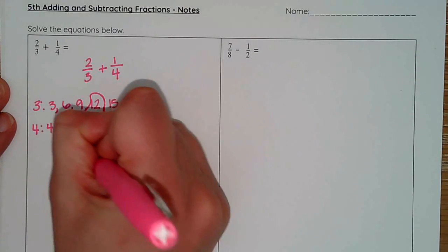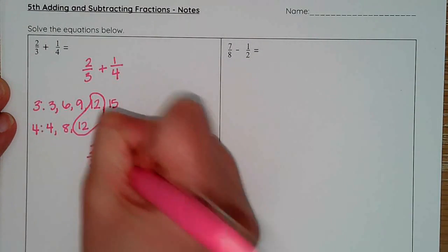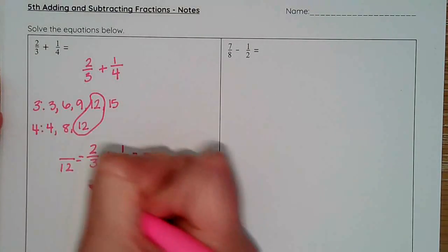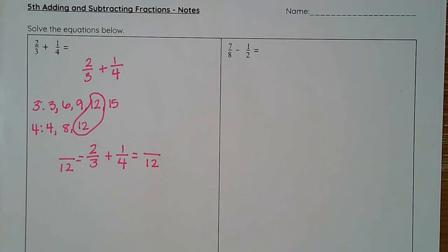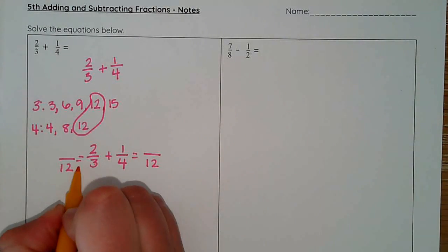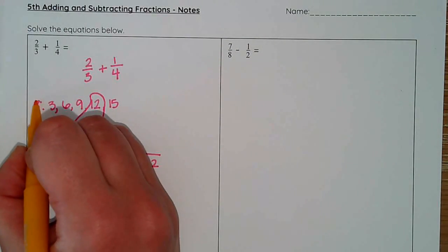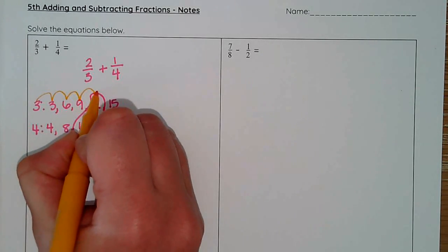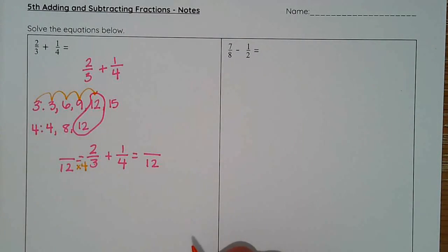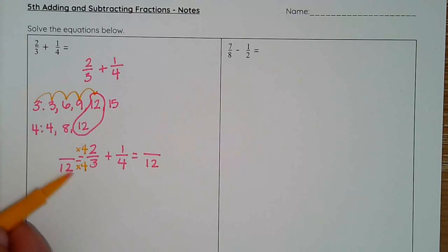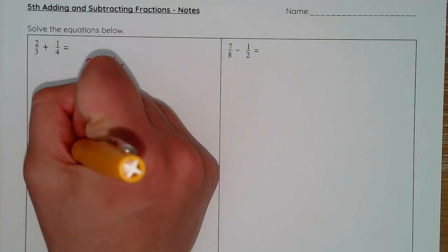So I'm going to rewrite my fraction down here for myself, and I need to create equivalent fractions with twelve in the denominator. Well, to get from three to twelve, I multiply by four. I can double check that by saying three times one times two times three times four. So because I multiply the denominator by four, I also need to multiply my numerator by four. If I multiply something here, I have to do the same thing here. That's how I create equivalent fractions. Two times four is eight, and that is my new fraction.